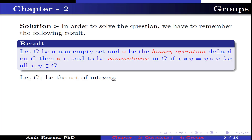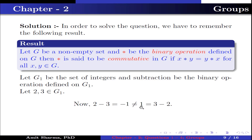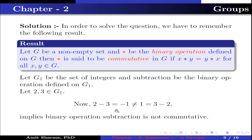Let G1 be the set of integers and subtraction be the binary operation defined on G1. Let 2, 3 belong to G1. Now 2 − 3 = −1, which is not equal to 1, which equals 3 − 2. This implies binary operation subtraction is not commutative. Therefore option A is false.